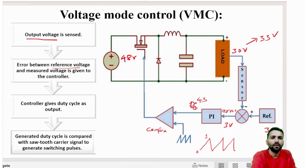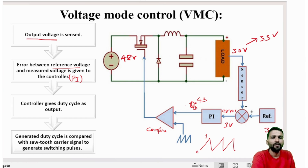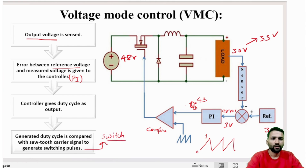To summarize in four blocks: the output voltage is sensed; the error between reference voltage and measured voltage is given to the PI controller; the controller gives the duty cycle as output; and that duty cycle is compared with the sawtooth carrier to generate switching pulses, which are given to the switch.